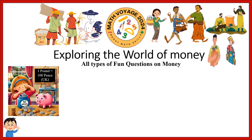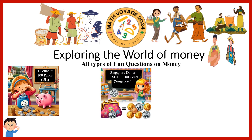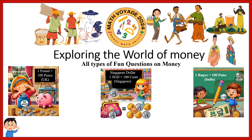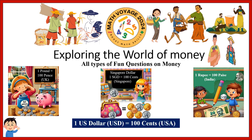One pound is equal to hundred pence. One Singapore dollar is equal to hundred cents. One rupee is equal to hundred paisae, and one US dollar is equal to hundred cents. Rupee is denoted like this and dollar this way. The values are different according to each country's economy — that is how much money a country has and how people use that money to buy and sell things.